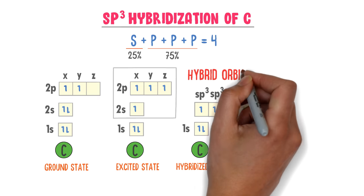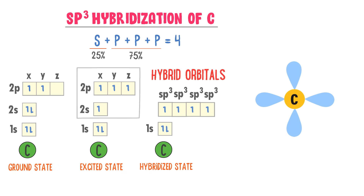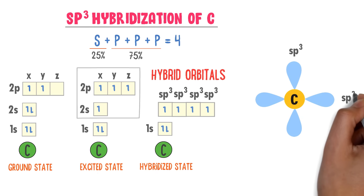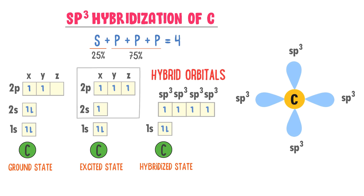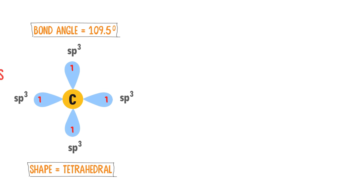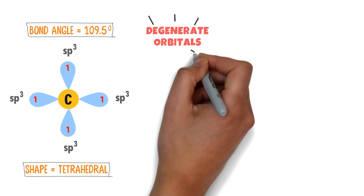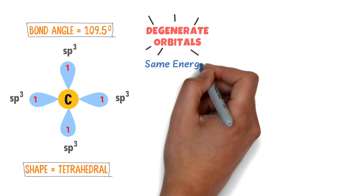We have four hybrid orbitals — SP3 — each having one electron. SP3 hybridization tells us the geometry of carbon. The bond angle in SP3 hybridization is 109.5 degrees and the shape is tetrahedral. These four SP3 hybrid orbitals are called degenerate orbitals, meaning they all have the same energy.